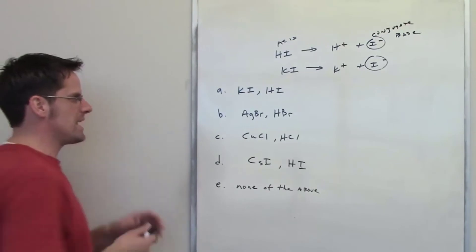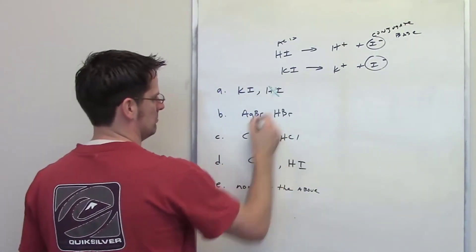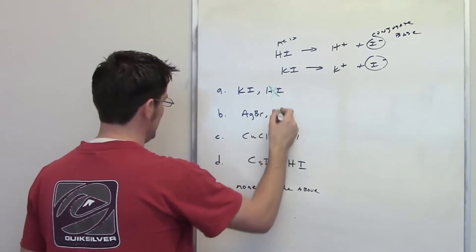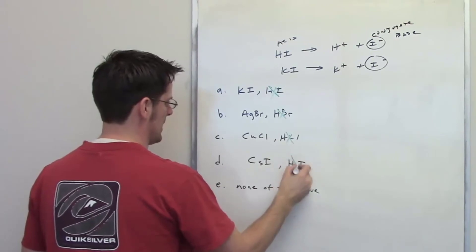So is one of these a weak acid? Well, HI is not a weak acid. HBr? Not a weak acid. HCl? Not a weak acid. HI? Well, not a weak acid either.